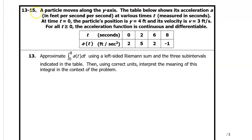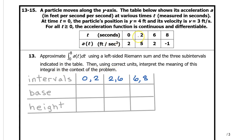For numbers 13 to 15, a particle moves along the y-axis. The table shows its acceleration a in feet per second per second at various times t measured in seconds. At time t equals 0, the particle's position is y equals 4 feet and its velocity is v equals 3 feet per second. For all t greater than or equal to 0, the acceleration function is continuous and differentiable. For number 13, approximate the integral from 0 to 8 of a of t dt using the left-sided Riemann sum and the three subintervals indicated in the table. The three subintervals are from 0 to 2, 2 to 6, and 6 to 8.